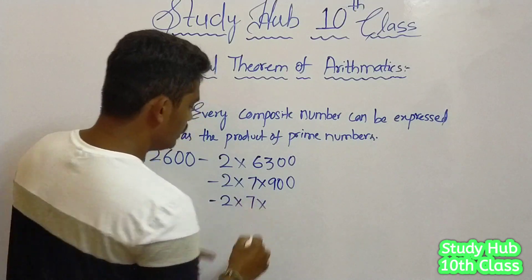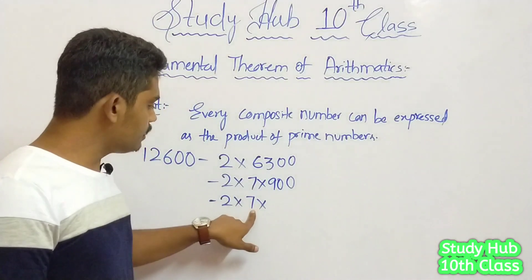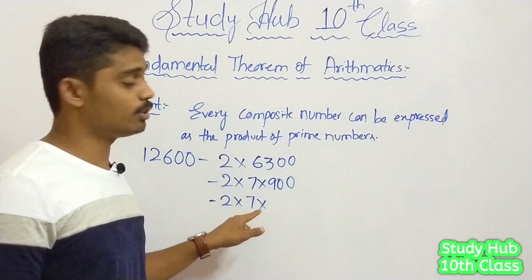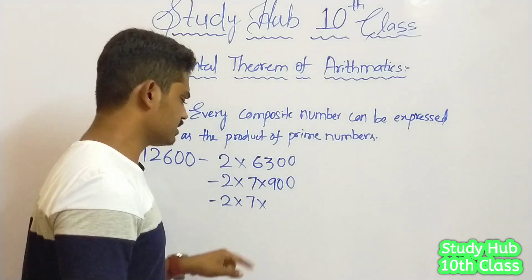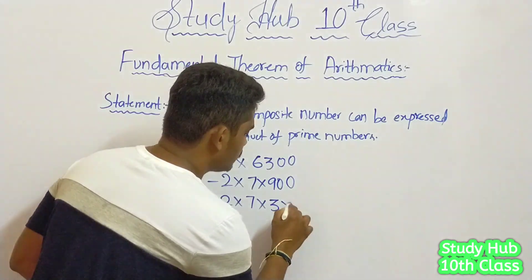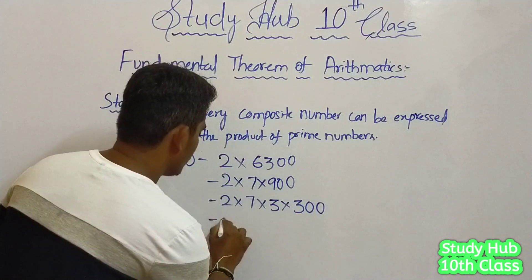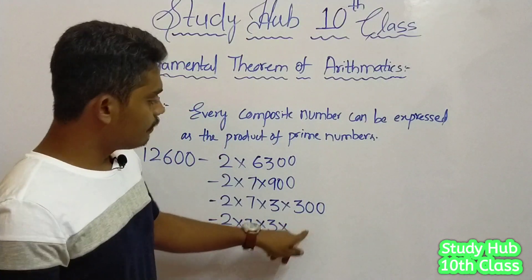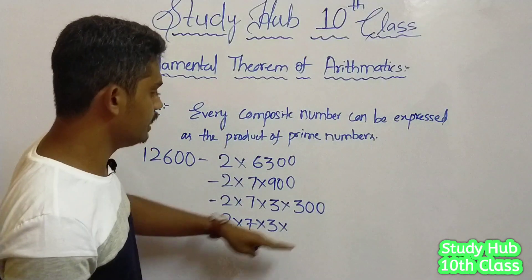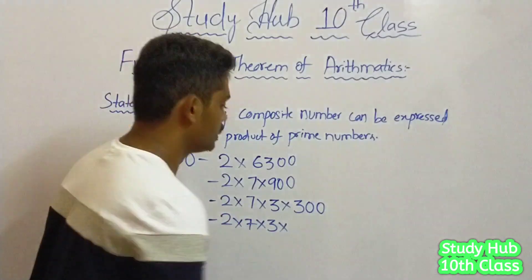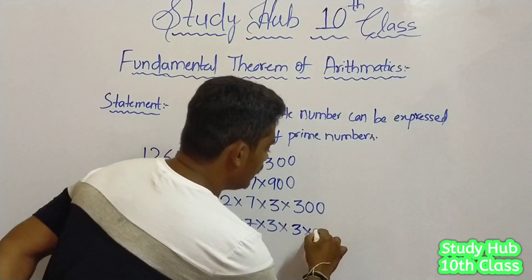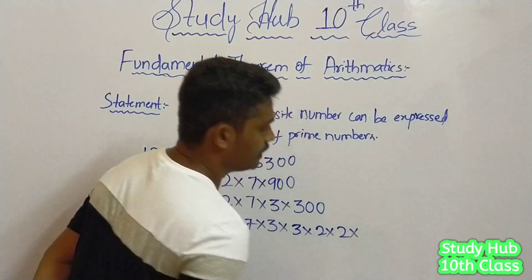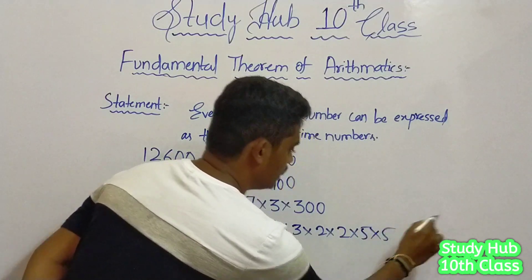After that, 7 is a prime number, friends. Can we reduce 7? Do we have any factors for 7? No. And 900, I can write as 3 into 300, and 300 we can reduce further. So 3 into 100, and 100 can be written as 2 into 50, 50 as 2 into 25, and 25 as 5 into 5.